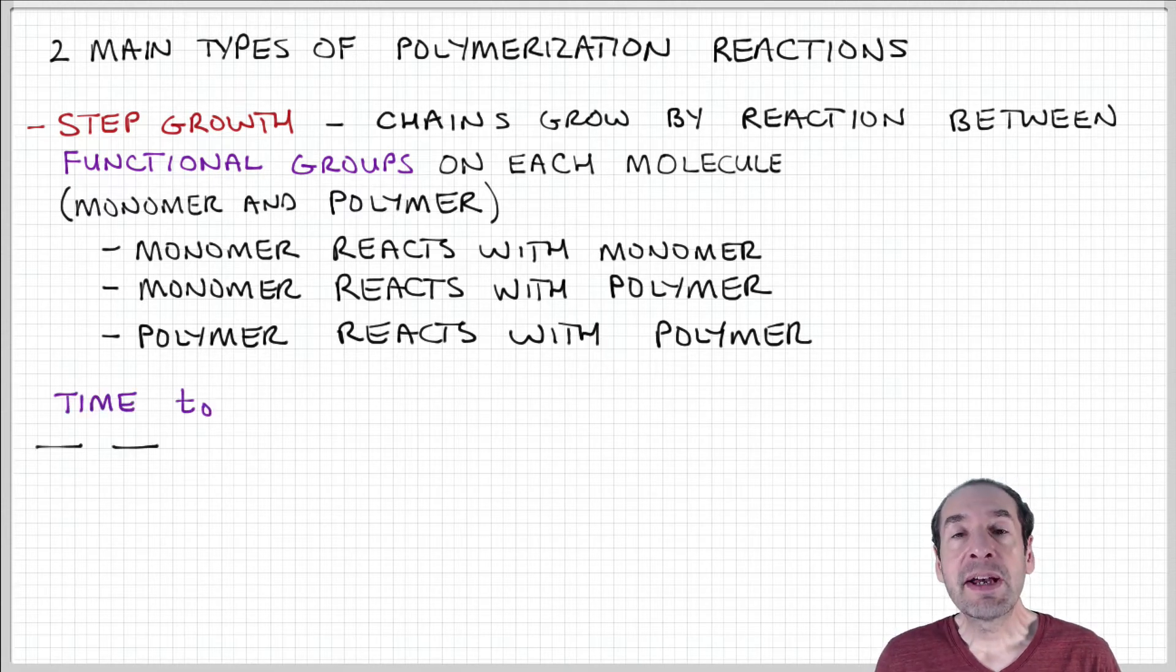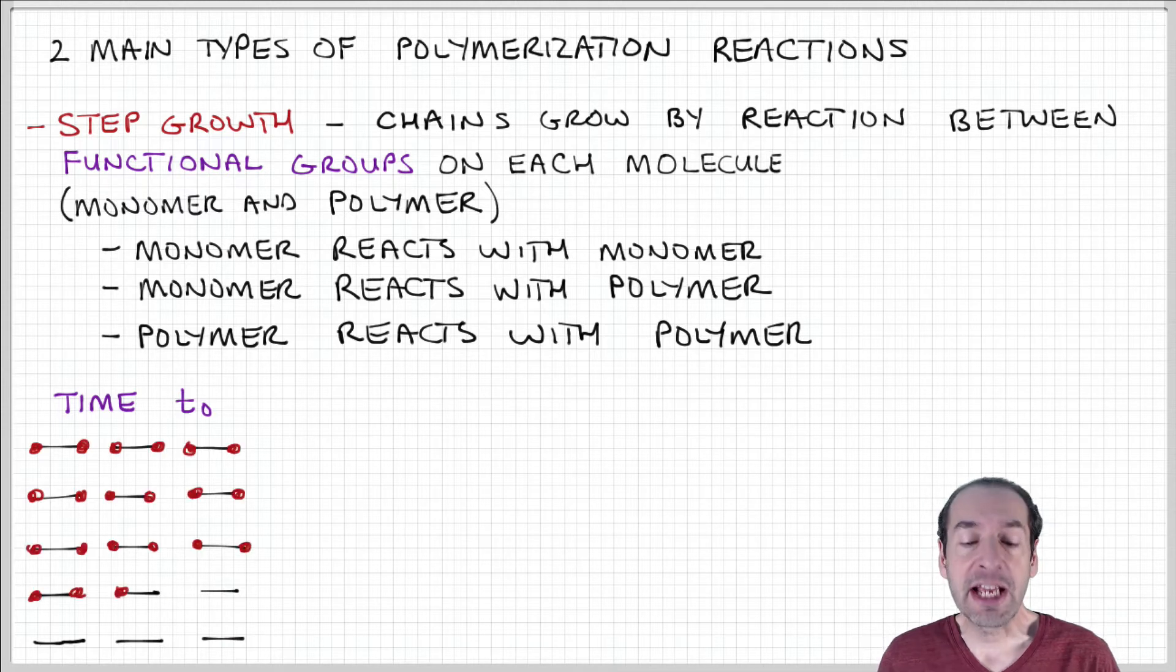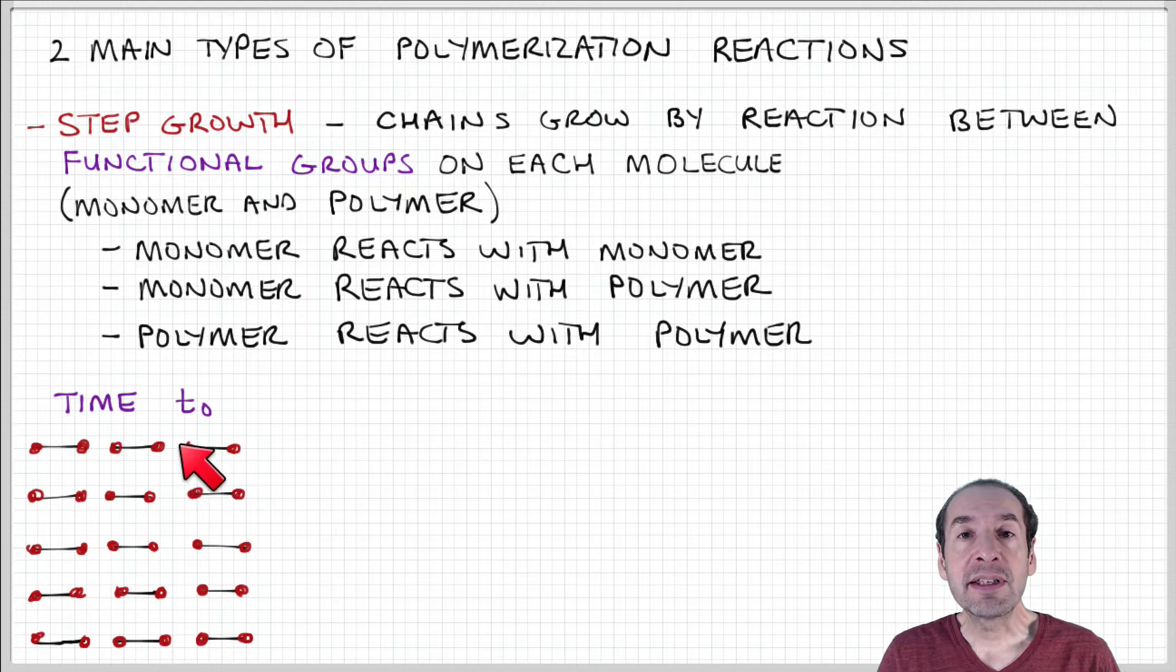If you think about what this might look like, at some initial time we have some monomers that have functional groups which are denoted by these red dots on each of these segments.